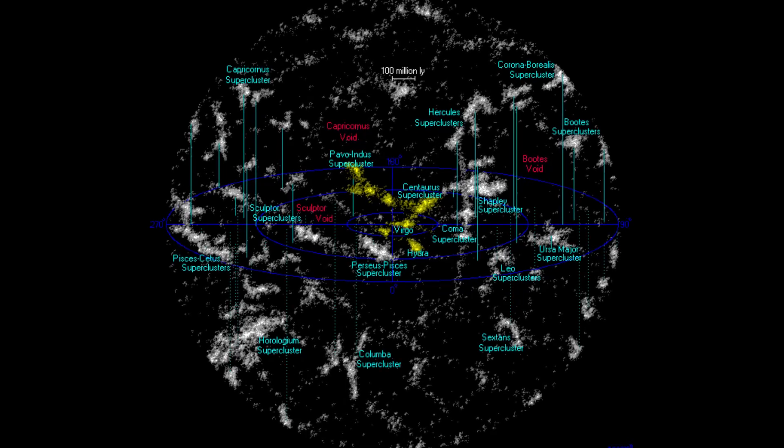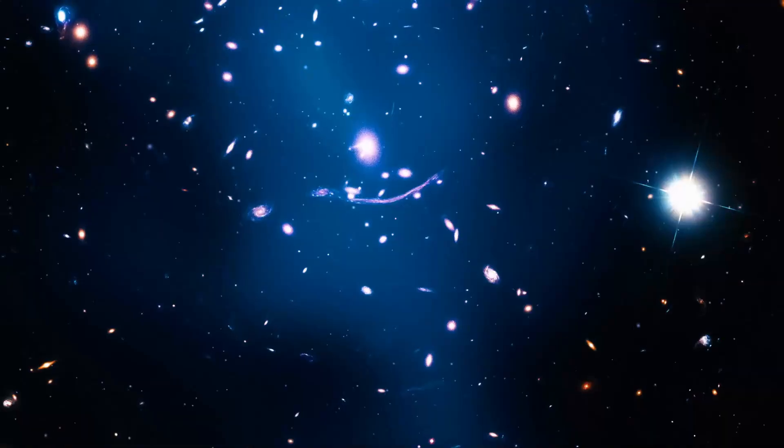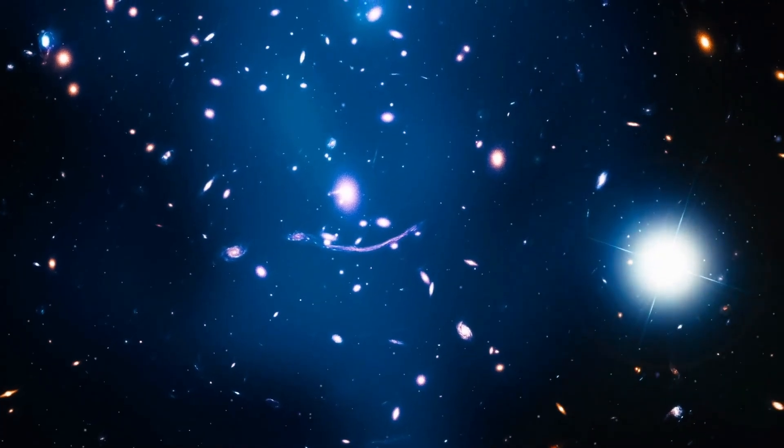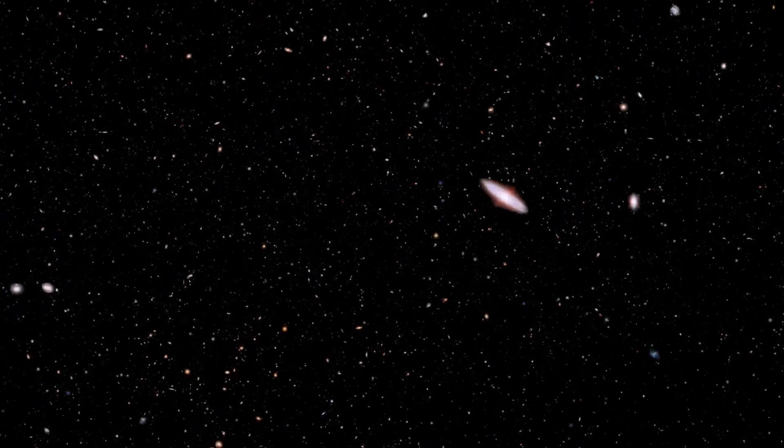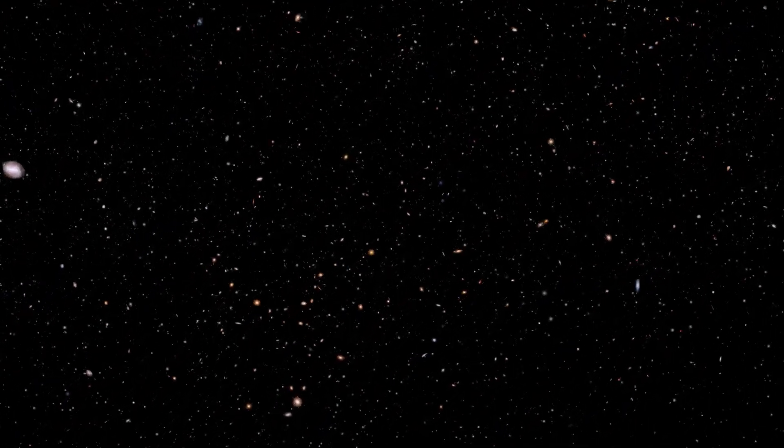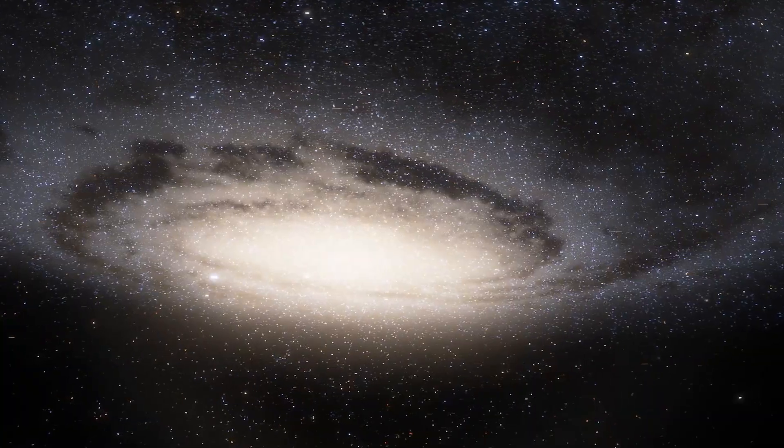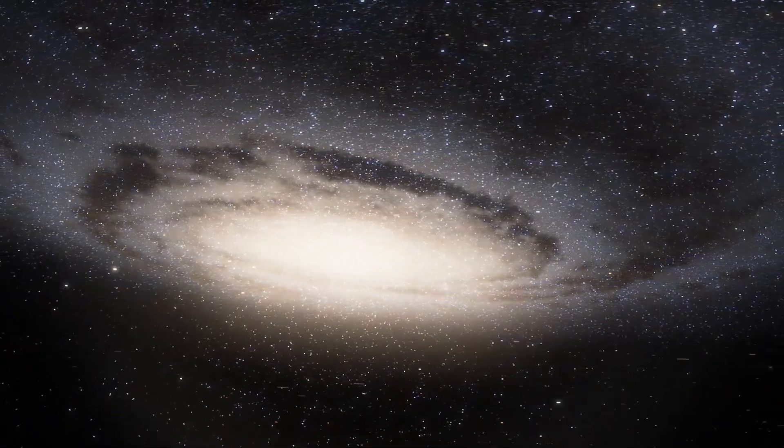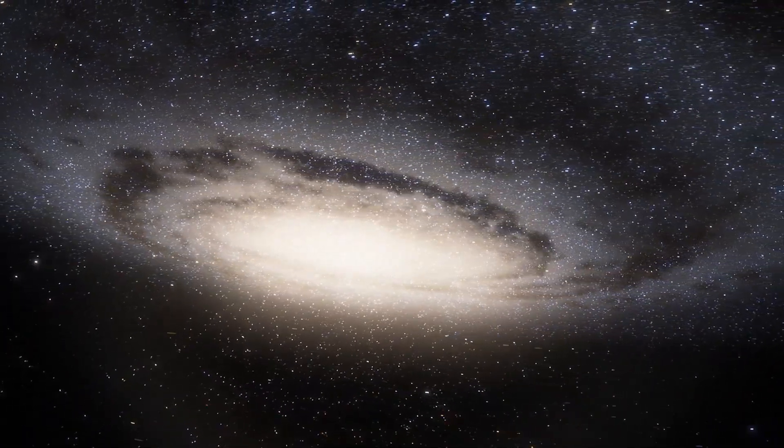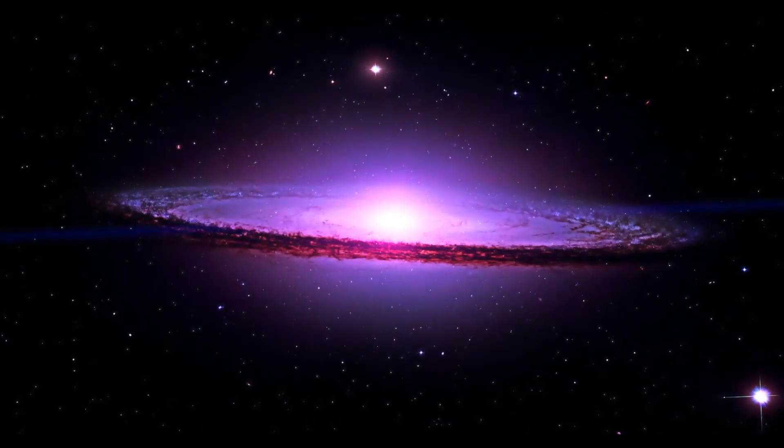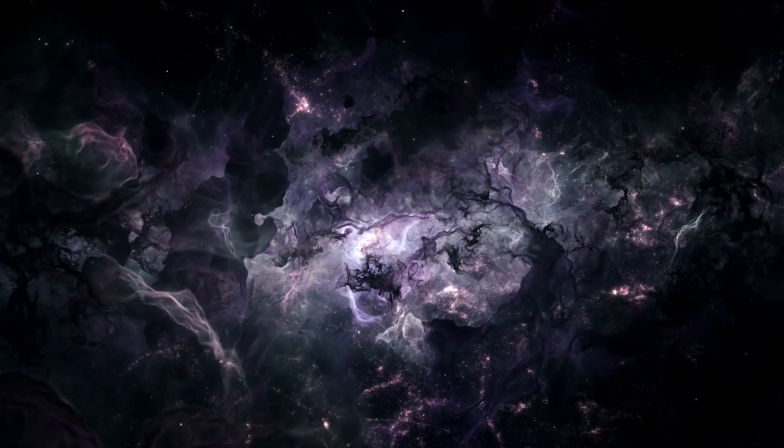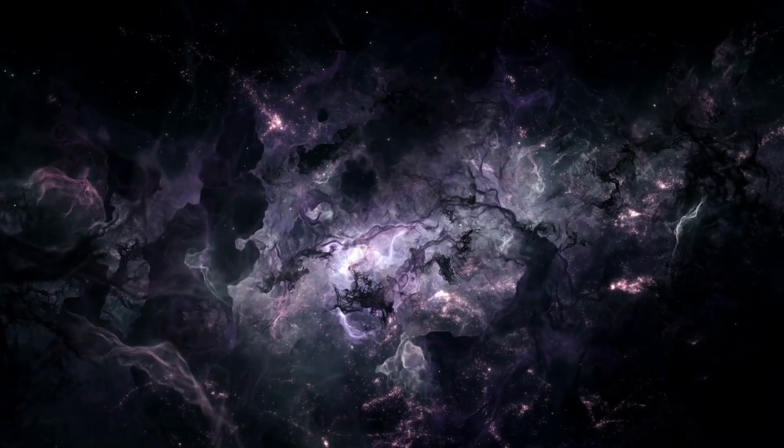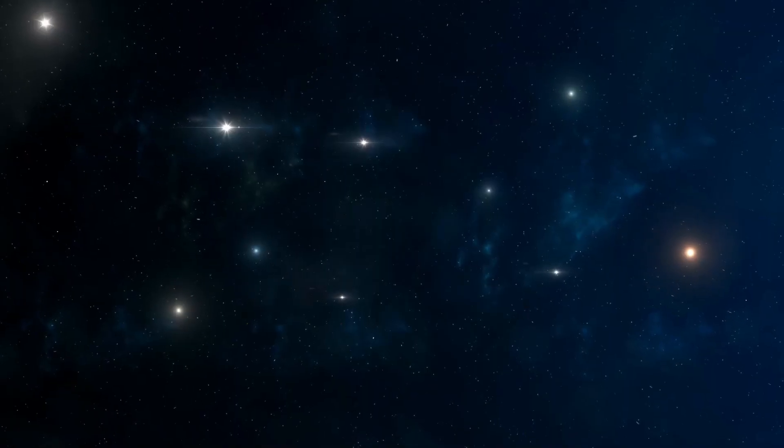The Laniakea supercluster is defined by the flow of galaxies across space rather than by the distance between them. This means that the galaxies of the Laniakea supercluster share a common gravitational destiny and are moving toward the same attractor point. The Great Attractor is the central gravitational point of the Laniakea supercluster, and it influences the motion and evolution of the galaxies around it. As the Great Attractor pulls us and other galaxies toward it, it creates a cosmic flow of matter that deviates from the uniform expansion of the universe.